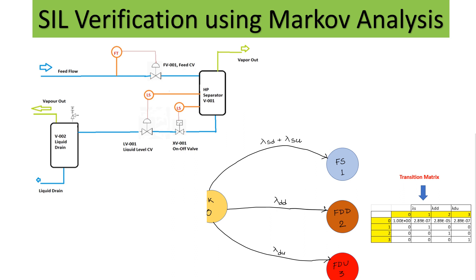We will also cover how to calculate the risk reduction factor and the availability of the loop. I will take the same example for which we have done a HAZOP, low power analysis, and SIL verification using simplified equations — and now we'll do the same using Markov analysis.